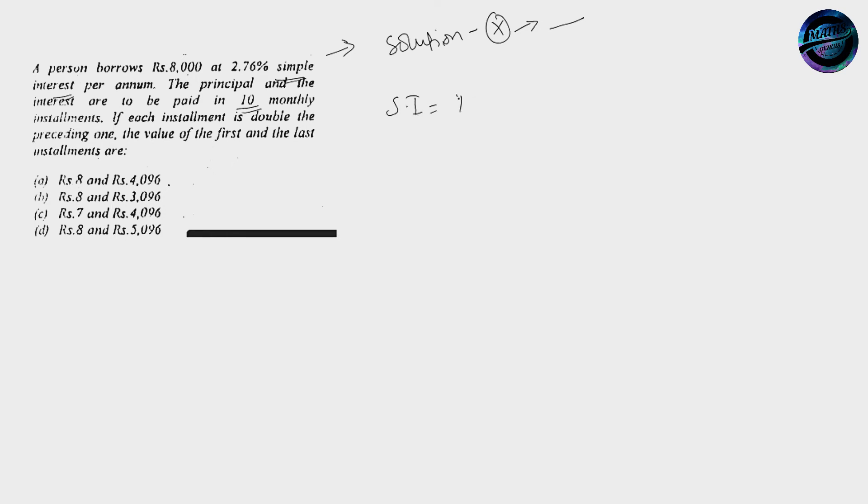Over here it says 8000 invested at 2.76 simple interest per annum. As we are aware, simple interest is calculated by PRT over 100. Principal amount is 8000, rate of interest is 2.76, and it is in 10 months. So I have to divide it by 12. Once I have divided it by 12, I am getting a value of 184. This is the total simple interest for the whole period of time. So the amount invested is 8000 after 10 months. You are getting total amount of 8184 in total.